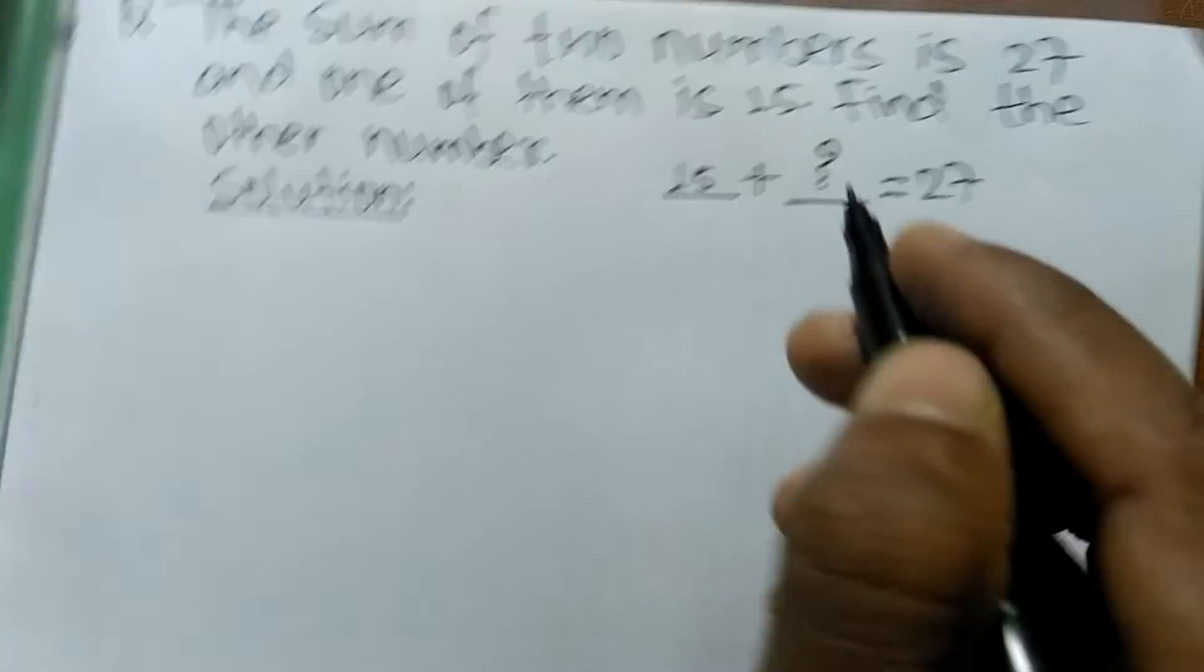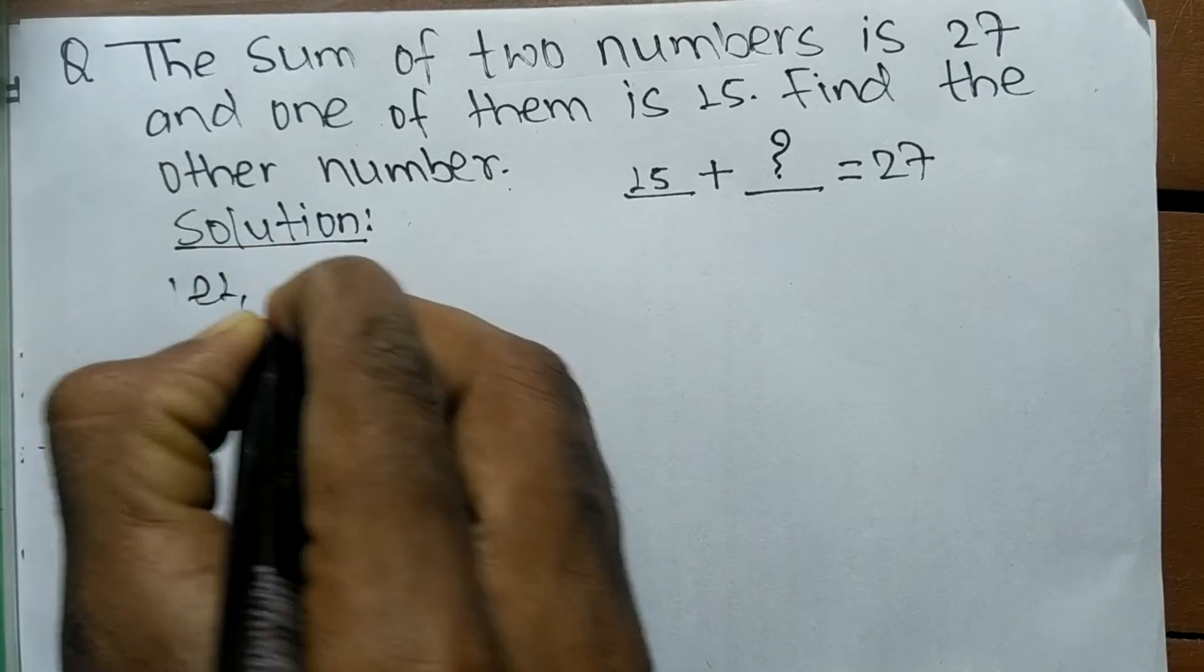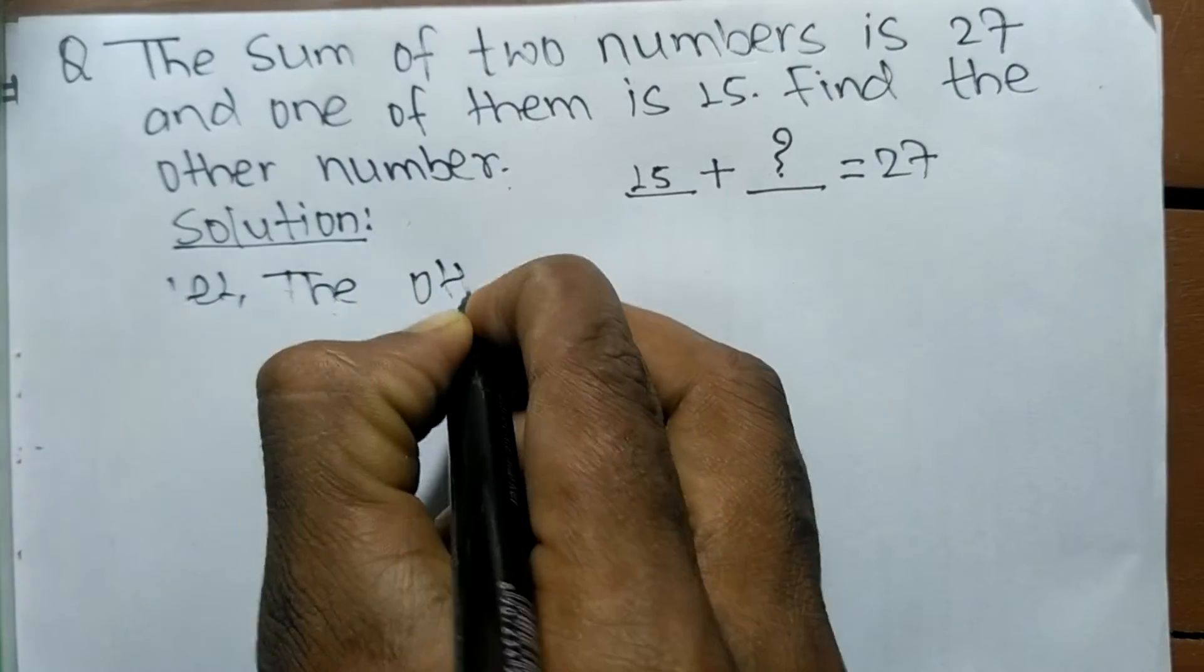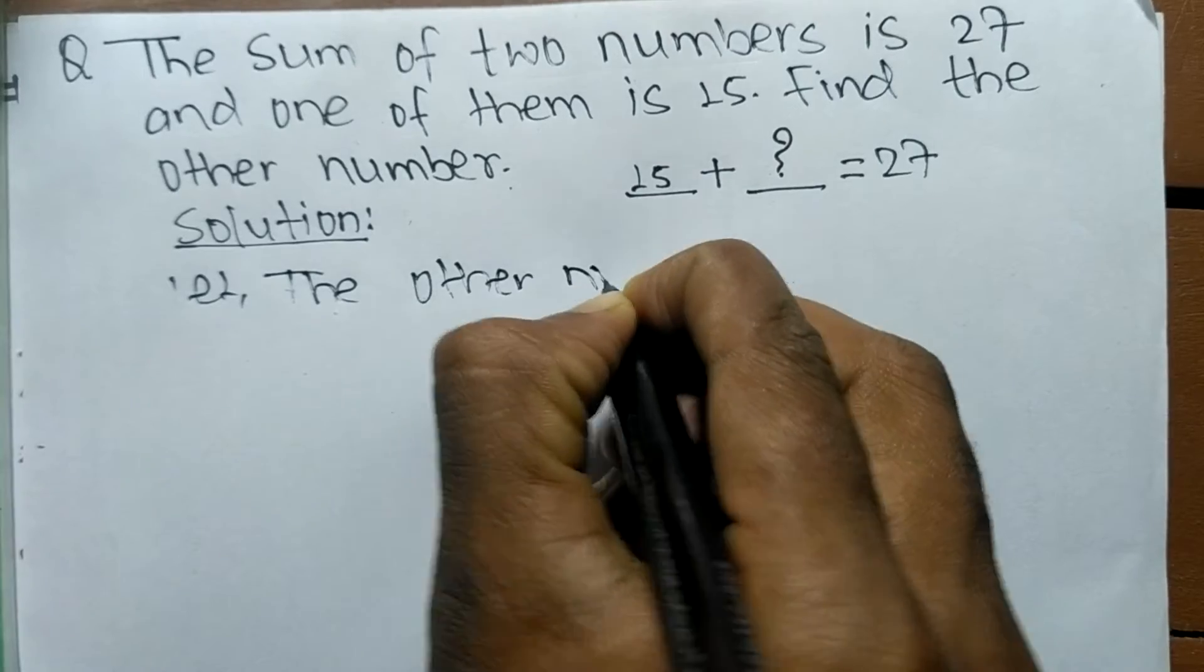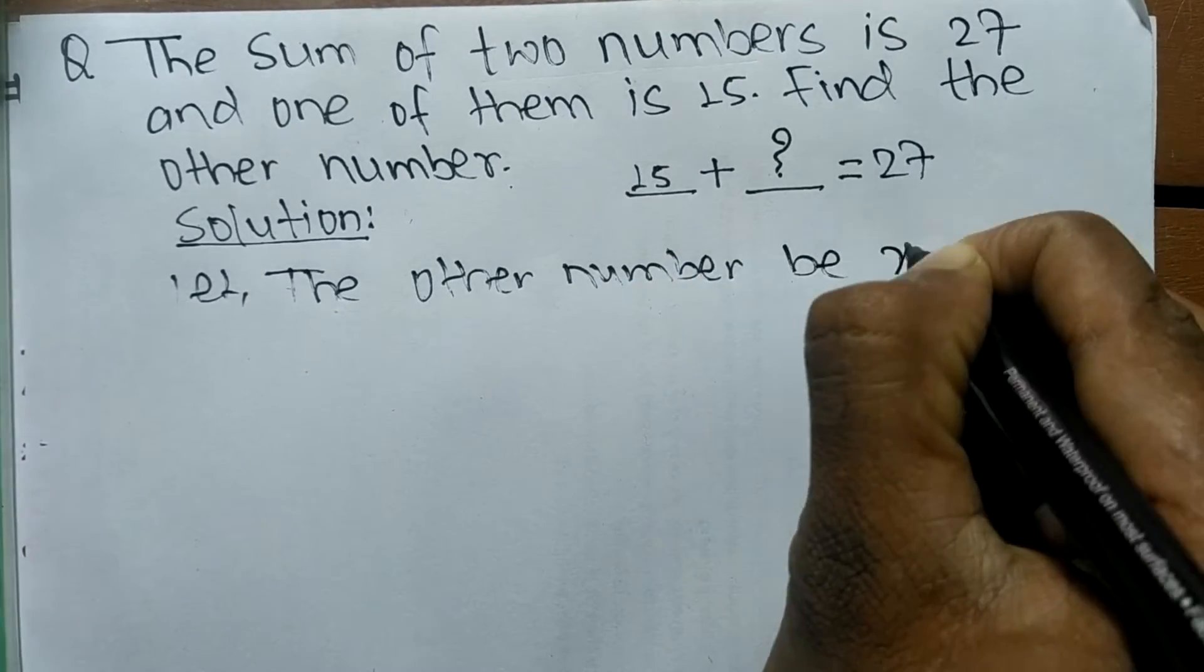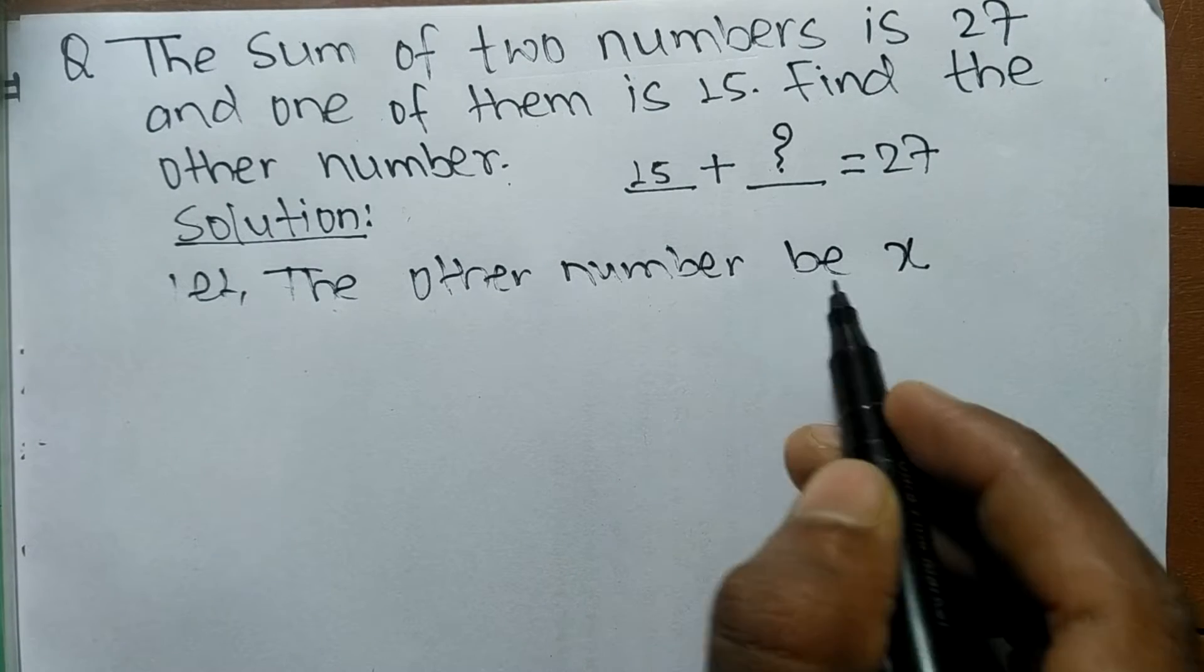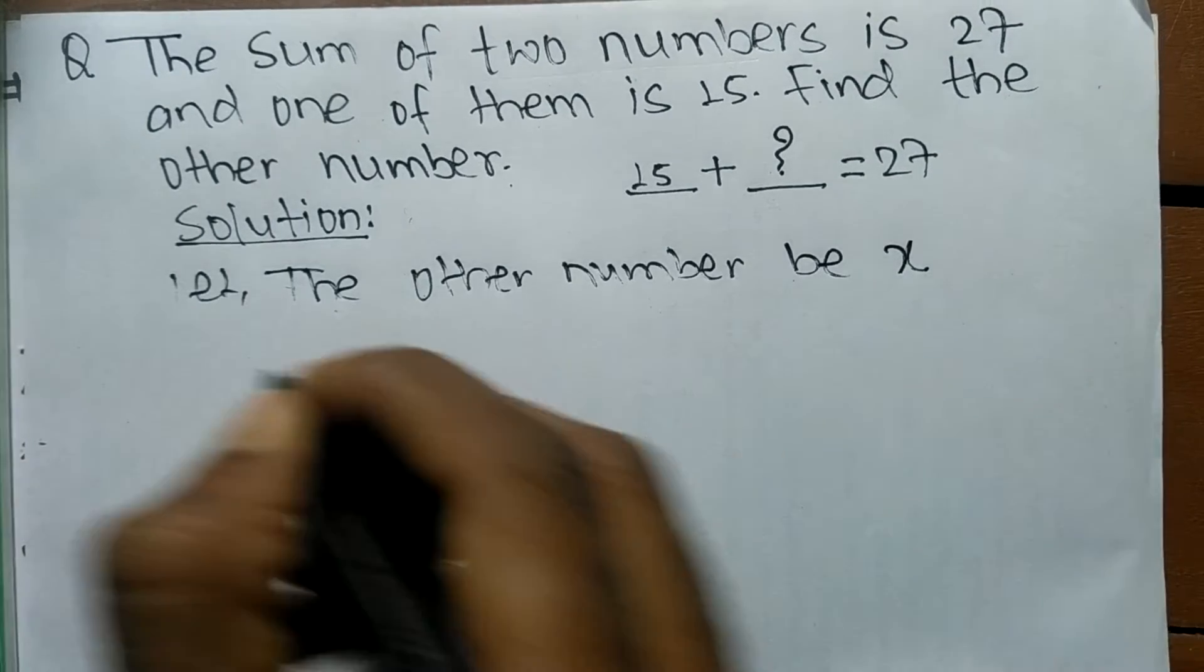Let the other number be x. So we suppose the other number which we have to find out to be x.